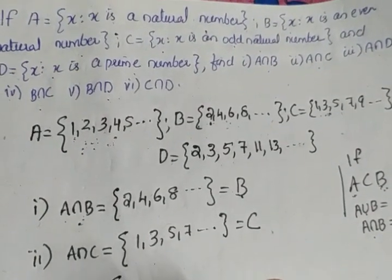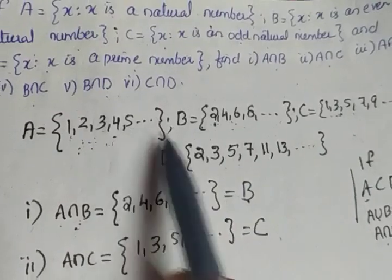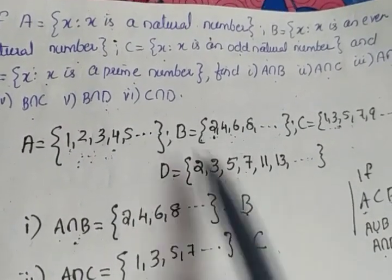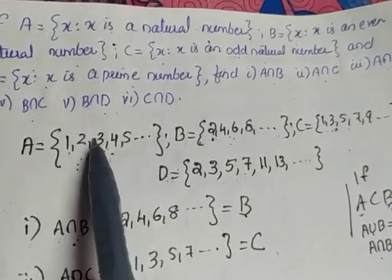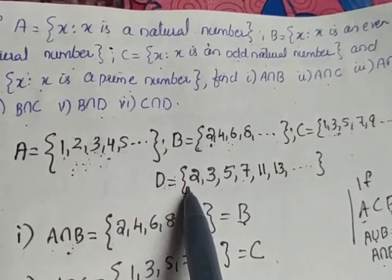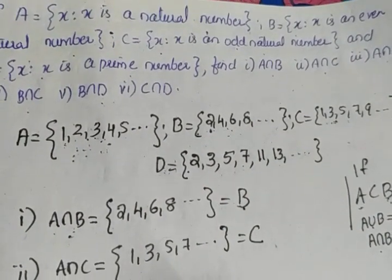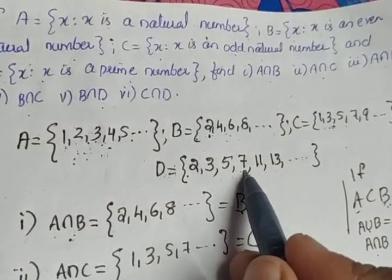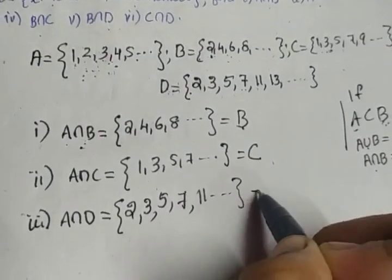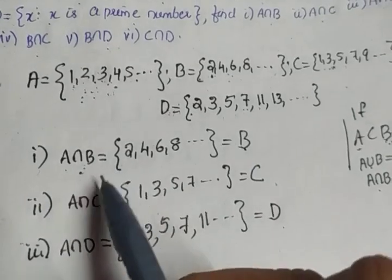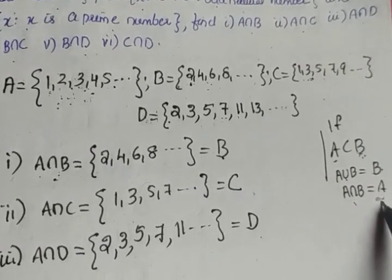Third question: A intersection D. A = {1, 2, 3, 4, ...} and D = {2, 3, 5, 7, 11, ...}. All elements of D are in A, so D is a subset of A. While taking the intersection, we get D = {2, 3, 5, 7, 11, ...}. From these three examples, it is clear that if one set is a subset of the other, while taking the intersection we get the smaller set.